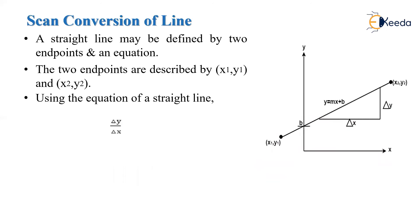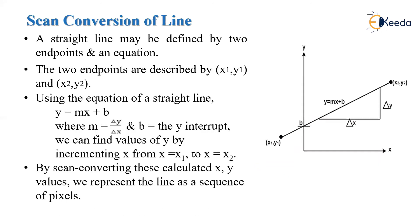Next, let's see the scan conversion of line. In scan conversion of a line, the line is always represented with two endpoints and the line equation. Here we have two endpoints x1, y1 and x2, y2. We have to find out all the points which lie on this line with the help of the equation y = mx + b.